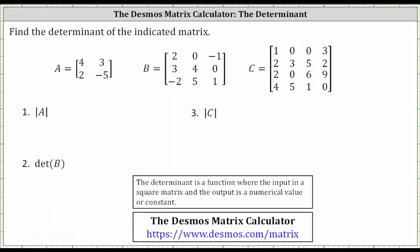So again, the determinant of matrix A is negative 26. The determinant of matrix B is negative 15. And the determinant of matrix C is negative 30. I hope you found this helpful.